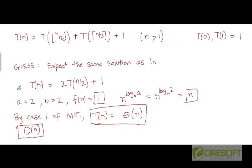One key takeaway from this is: when using the substitution method, if the induction proof doesn't go through, you can try subtracting a lower order term and see if it goes through. If it still doesn't go through even after that, it may be a sign that the original claim is not actually true — maybe that's why you're not able to prove it using induction. But if you hit a wall using the straightforward method, try adding or subtracting a lower order term, depending on what makes more sense for the recurrence and whether you're proving an upper or lower bound.